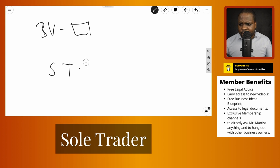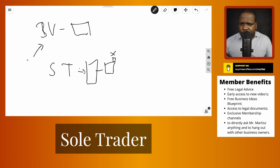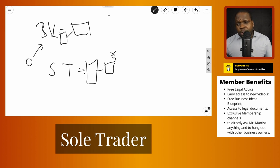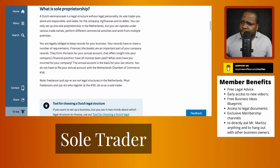If you're a sole trader and you sign a contract, you as a person are bound to that contract. So if you sign a contract with company X, you and company X have a contract. But if you have a BV and the BV signs a contract, the BV is bound — not you personally. That's what they mean by legal personality. You are personally responsible and liable for the company's finances and its debts.